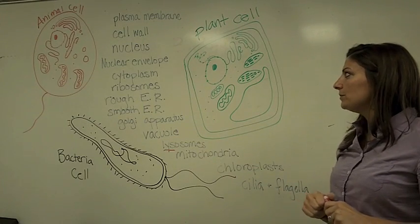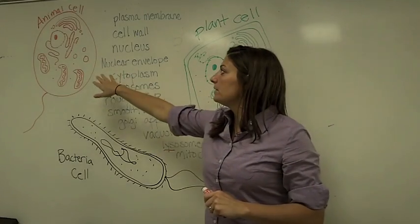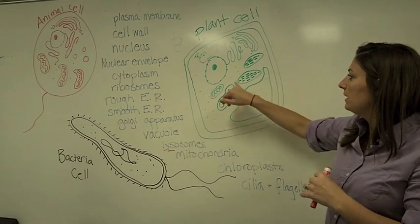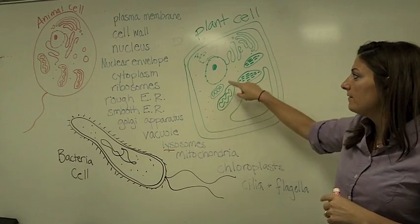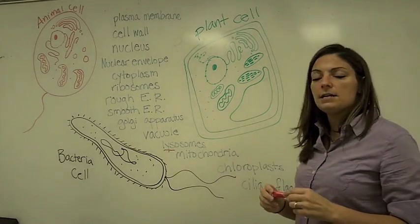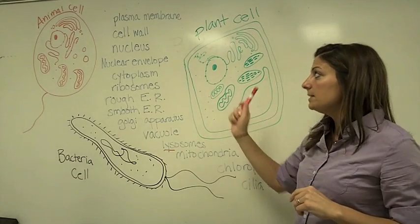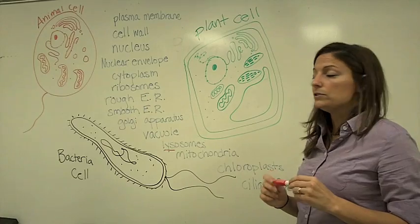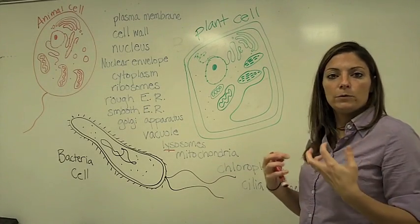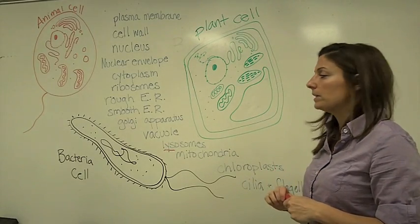Mitochondria — we find those again just in plant and animal cells. They look kind of like elongated ovals and they have an inner membrane too, so they have two membranes. What happens there is cellular respiration. Both plants and animals do cellular respiration — that's where the cell takes food energy and converts it into cell energy so the cell can do the work it needs to do.